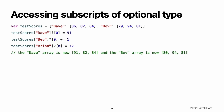Accessing subscripts of optional type. If a subscript returns a value of optional type, such as the key subscript of Swift's dictionary type, place a question mark after the subscript's closing bracket to chain on the optional return value. This example defines a dictionary called test scores, which contains two key-value pairs that map a string key to an array of integer values. The example uses optional chaining to set the first item in the Dave array to 91, to increment the first item in the Bev array, and to set the first item in an array for a key of Brian. The first two calls succeed because the test scores dictionary contains keys for Dave and Bev. The third call fails because the test scores dictionary does not contain a key for Brian.